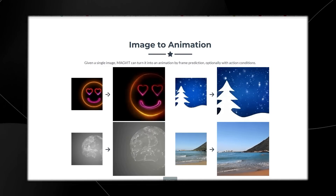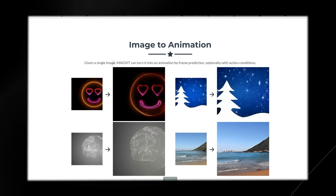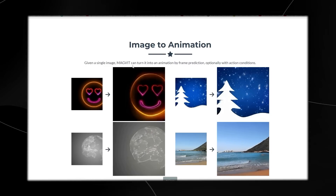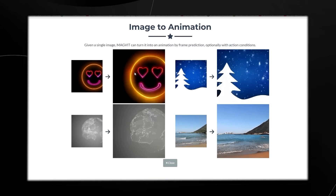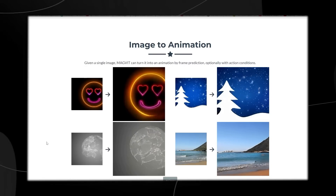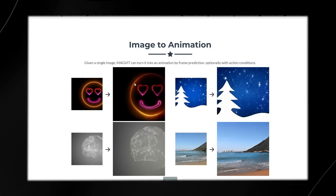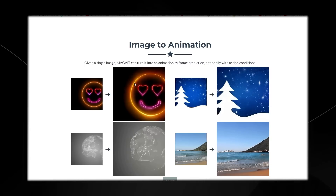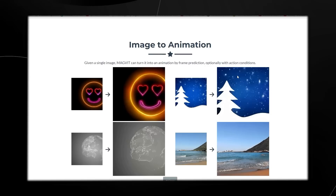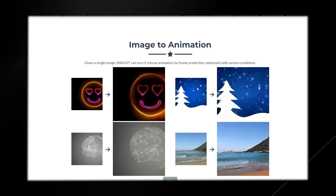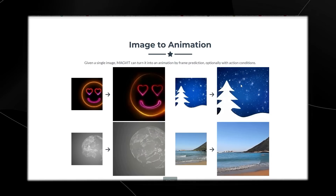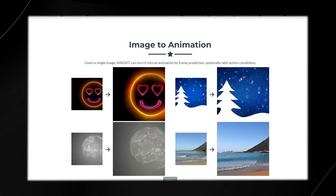Then there's image to animation. Given a single image, MAGVIT can turn it into an animation by frame prediction, optionally with action conditions. When you use a certain image, MAGVIT understands what that image is and performs the correct animation. For example, we know a neon sign doesn't blink — it glows — which is why we can see the opacity increase and decrease. That key example shows this AI software is much smarter than we think. With a Christmassy winter themed image, the AI understands that snow falls downward, not sideways, and that the tree isn't moving but the snow is.